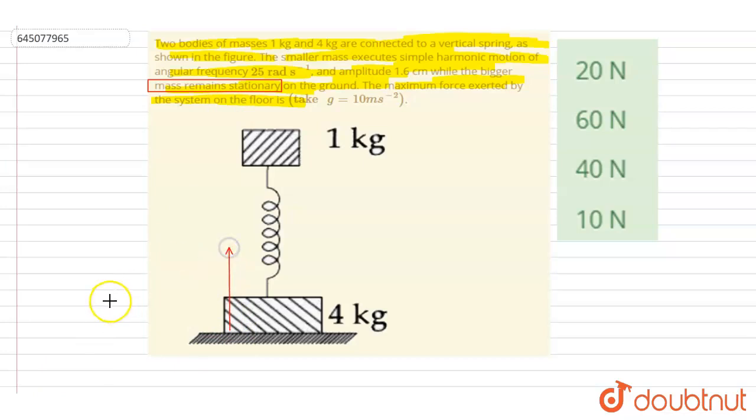When will the normal reaction value be maximum? If you see, let's say this is the normal reaction N and this is the mg weight of this bigger block, that is 40 newtons. And here the kx force, the spring force, will act in the downward direction.